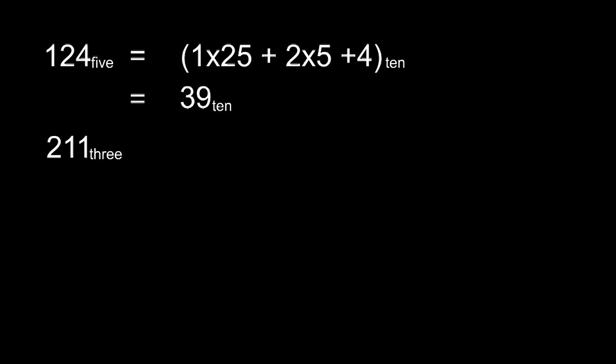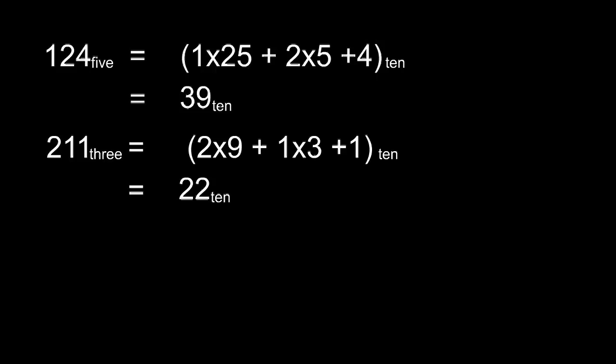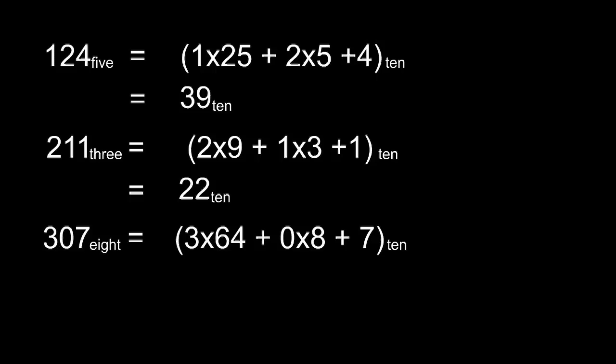Two, one, one in base three: that's a single one, then one lot of three, then two lots of three times three, or two lots of nine. Adding those together, we get twenty-two in base ten. And finally, three, zero, seven in base eight: that's seven, plus naught times eight, plus three times eight times eight, or three times sixty-four. Add those together and we get one hundred and ninety-nine in base ten.